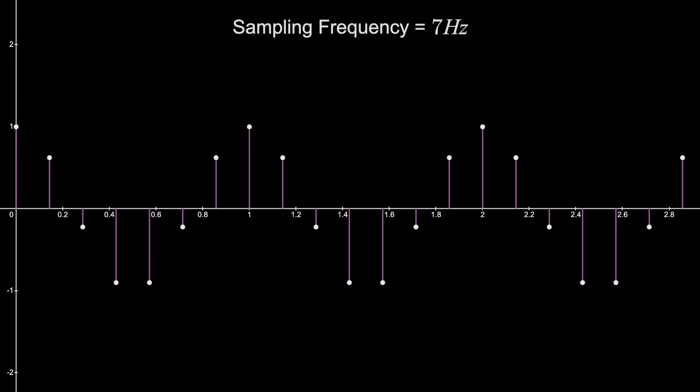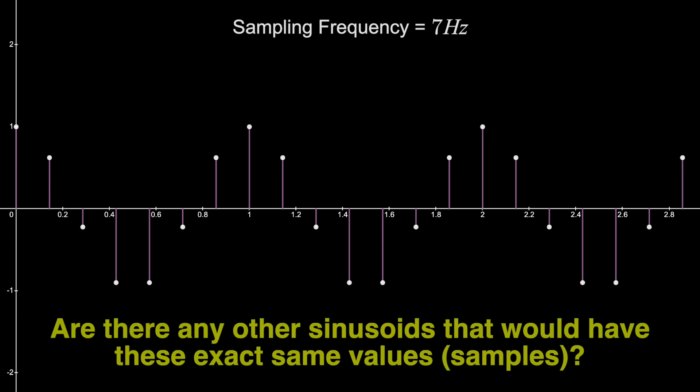Now, if I take away the original signal and just handed you these samples, and I told you the original signal was a cosine function with no phase, amplitude of 1, and it was sampled at a rate of 7 Hz, so you know mostly everything. Could you then determine what the original signal was? Or, asked in a different way, are there any other sinusoids that would have these exact same values and thus would look exactly like this if sampled at 7 Hz?